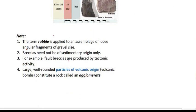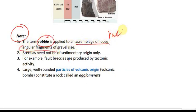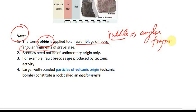Also note that the term 'rubble' is applied to assemblages of loose angular fragments. So when you see the word rubble, it means gravel-sized angular fragments that are loose and not yet lithified — we call that rubble.